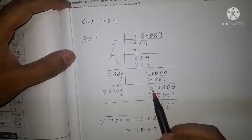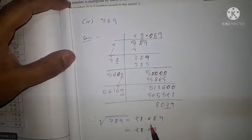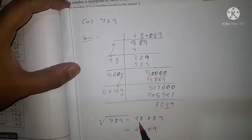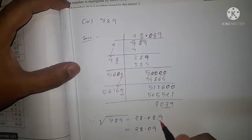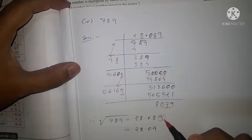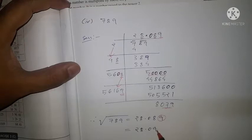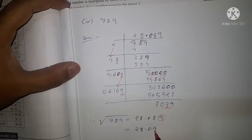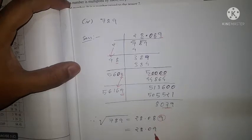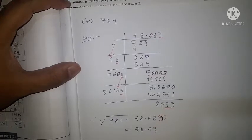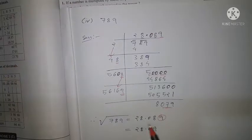We continued up to three decimal places, so the square root of 789 is 28.089. Since the third digit is 9, which is greater than 5, we round off: increase the 8 by 1 to get 28.09. That is the answer.